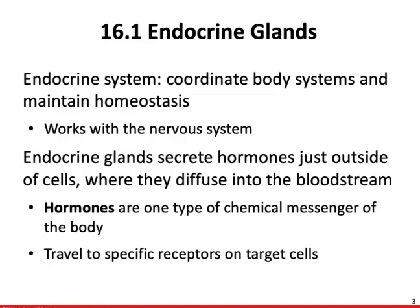Hormones most frequently travel in the bloodstream and come into contact with virtually all cells, but they typically affect only one particular type of cell called target cells. Target cells have receptors, which are protein molecules that recognize and bind to specific hormones. These are cell recognition proteins found on the surface of the cell membrane that specifically respond to these chemical messengers. Cells other than target cells usually lack the correct receptors and are unaffected by that hormone.